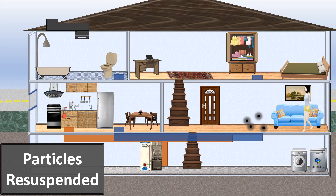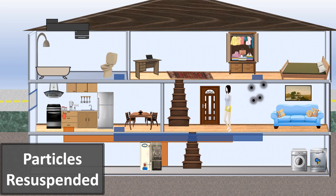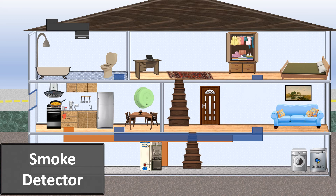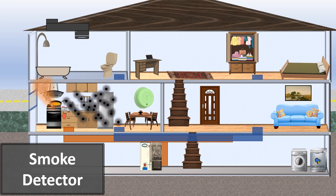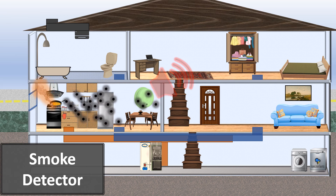As a person walks across the floor, the particles on the floor become re-aerosolized — this is very important to understand conceptually. A smoke detector is actually a crude air monitor for particles. When the particles are incredibly high, the smoke detector will go off. It's a very low-quality air monitor, but it's very reliable.